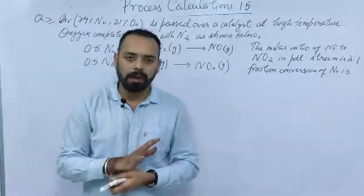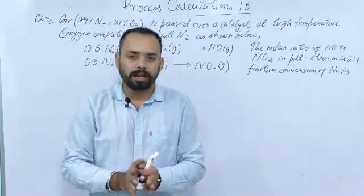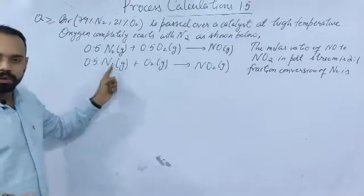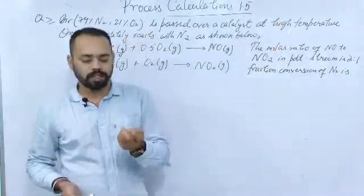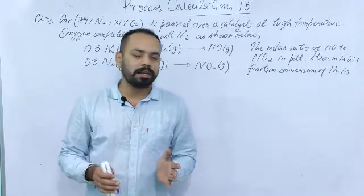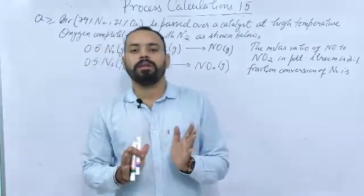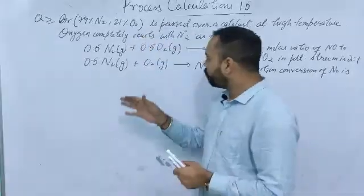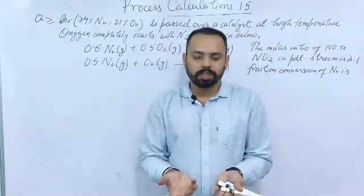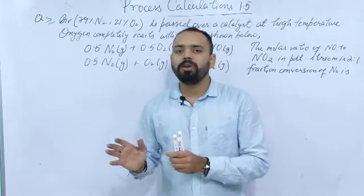In most problems nitrogen is considered inert, but if a reaction of nitrogen is provided in the question you cannot consider nitrogen as inert. Again in this problem, think about the basis — basis is required. What you have to find is conversion, which is a ratio. Ratio is always independent of basis, so you have to assume some basis.